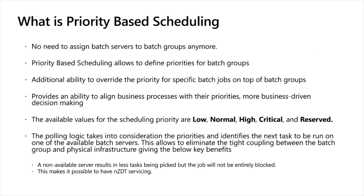Now, what is PBS? In platform update 31, we introduced the concept of Priority-Based Batch Scheduling. Essentially, it decouples your servers from the batch group. Once you turn on PBS, you no longer need to assign your batch group to a batch server. PBS allows you to define priority at the batch group level, and the PBS framework will use the available pool of resources to execute batch jobs based on that priority.